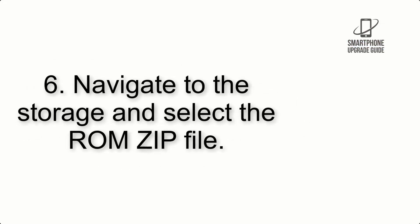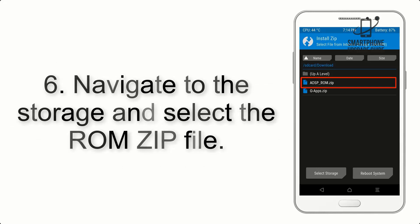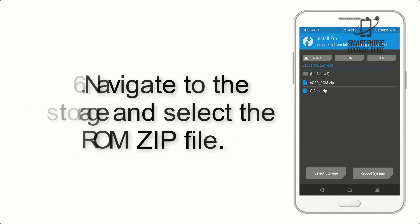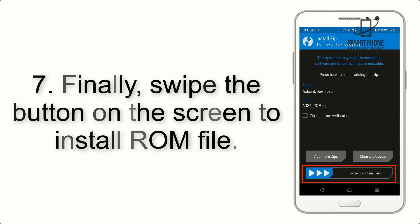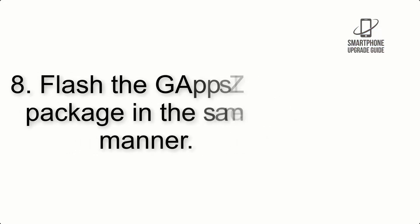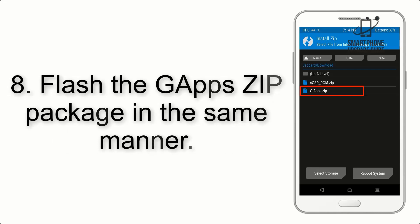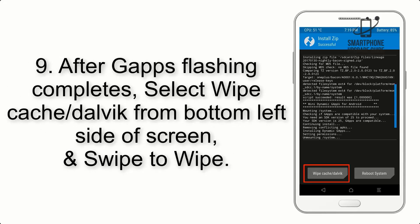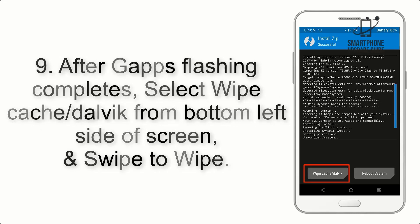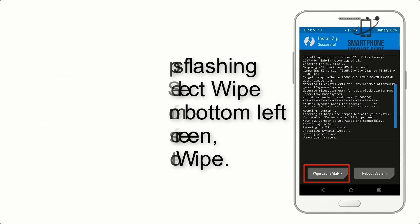Step 6: Navigate to the storage and select the ROM zip file. Step 7: Swipe the button on the screen to install the ROM file. Step 8: Flash the GApps zip package in the same manner. Step 9: After GApps flashing completes, select Wipe Cache and Dalvik from the bottom left side of the screen and swipe to wipe.